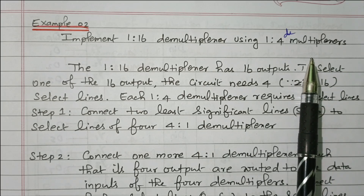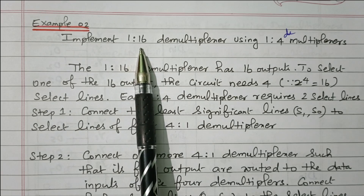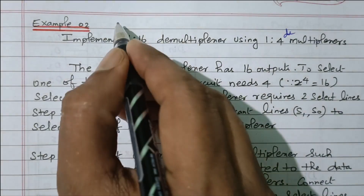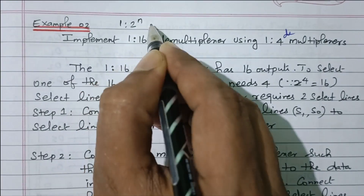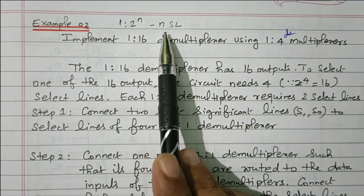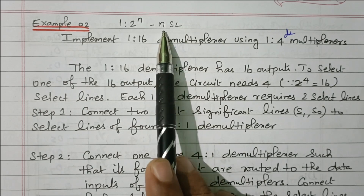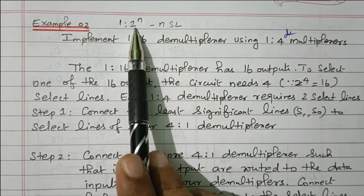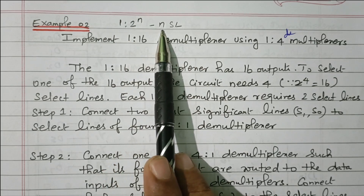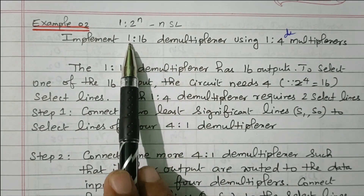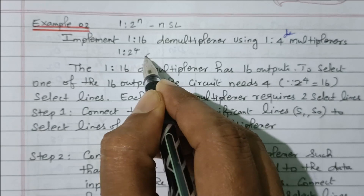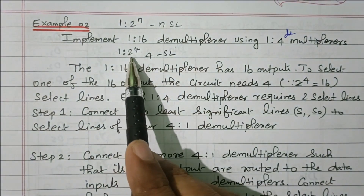Now we'll go to the topic. We need to implement a 1-to-16 demultiplexer using a 1-to-4 demultiplexer. We know that the demultiplexer is nothing but 1-to-2-to-the-power-n, with n selection lines — only one input, 2-to-the-power-n outputs, with n selection lines. This is the basic structure of the demultiplexer. The n selection lines decide the output. So this 1-to-16 demultiplexer means 1-to-2-to-the-power-4 with 4 selection lines.